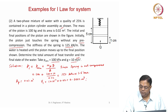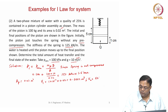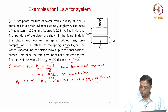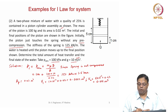Similarly, V2 = 5 × 10⁻² × 0.02 = 0.001 m³. So the initial and final volumes are known.